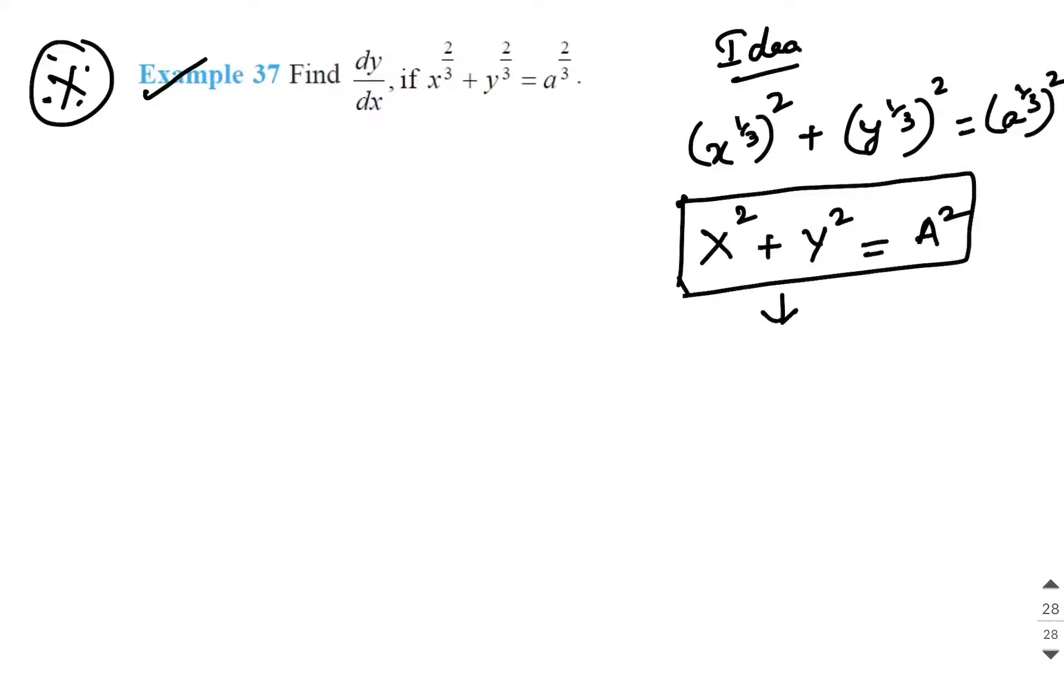For equation of a circle with center at origin, what are the parametric coordinates? Parametric coordinates are the radius cos theta and y is equal to the radius sin theta. But here, what is the value of x? The value of x is capital X is x power 1 by 3, the value of capital A is a power 1 by 3 cos theta.